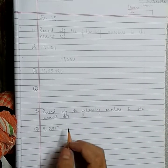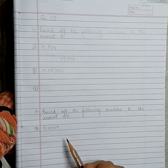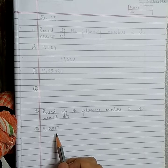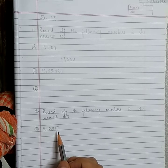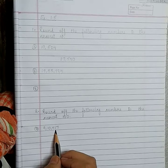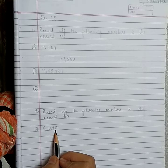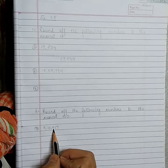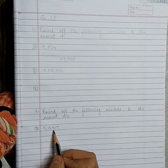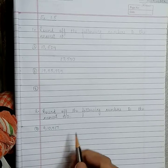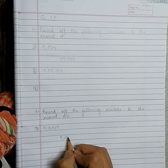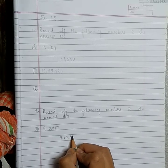Nearest hundred: We round off to the nearest hundred by looking at the tens place. If it is less than 5, we will not add to the 100th place. The answer will be 9,10,400.